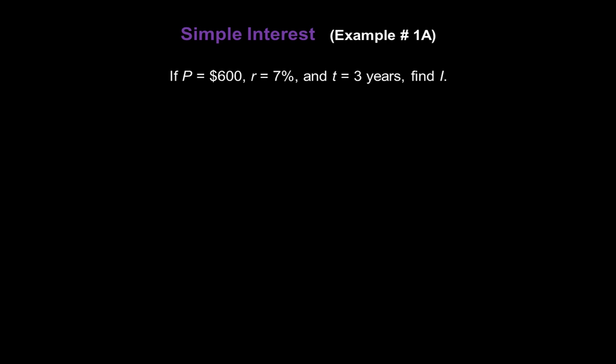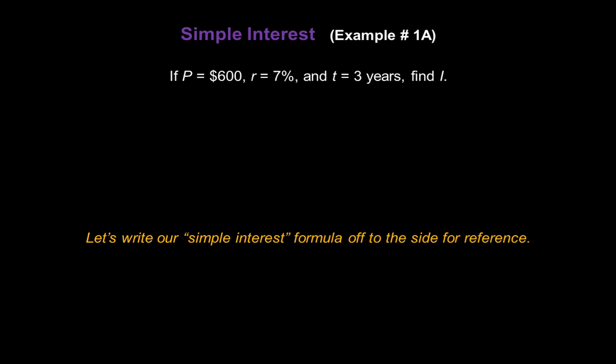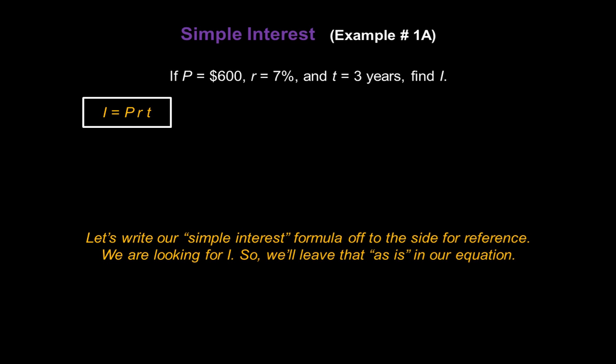Now let's take a look at some examples. In this case, we have a principal amount of $600, an interest rate of 7%, a time period of 3 years, and we want to know how much money or interest we can make. Let's start by writing our simple interest formula off to the side for reference. We know it's I equals PRT. Now we're looking for I in this case, so we're going to leave that as is in our equation. So let's start by writing I equals.